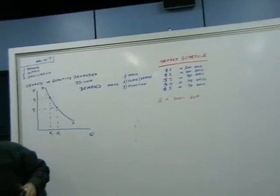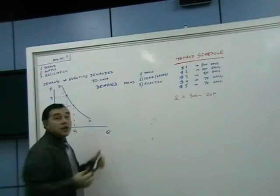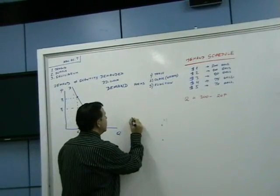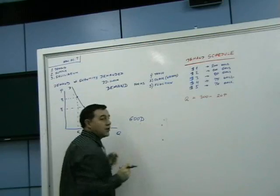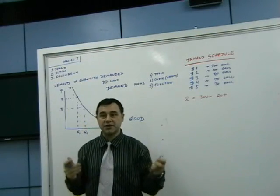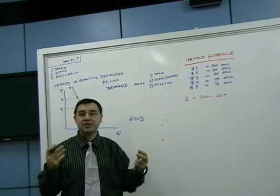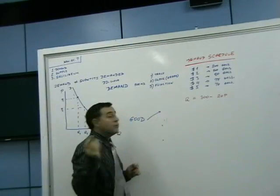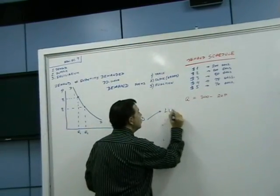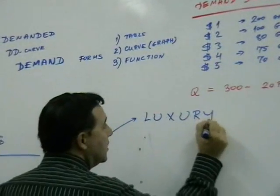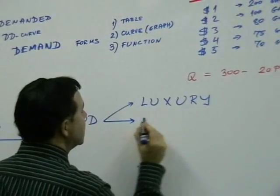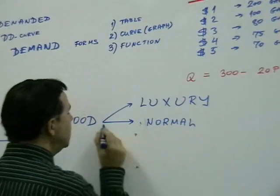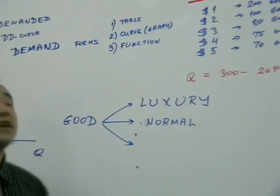If consumers demand a particular good, goods fall into a number of categories. As a business manager you must understand the nature of your good. We'll start with luxury, then move to the standard case — normal — and then inferior.